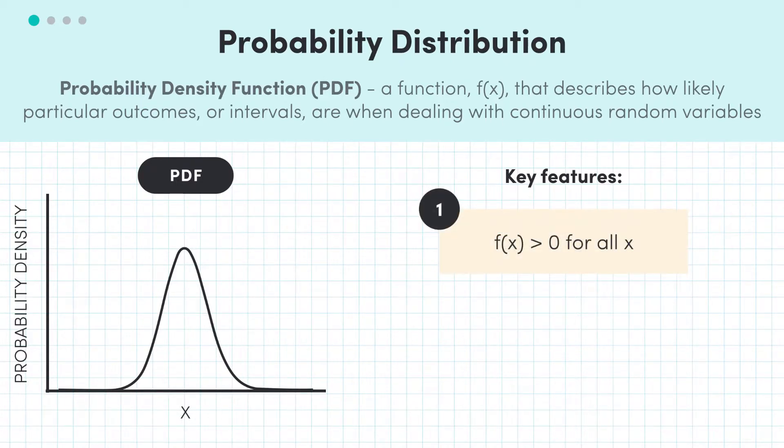Firstly, f(x) is greater than zero for all x, so you can never have a PDF ever go below zero. Essentially, this is because it would suggest an outcome or an interval has a negative probability, and we all know the lowest probability that you can have is zero.